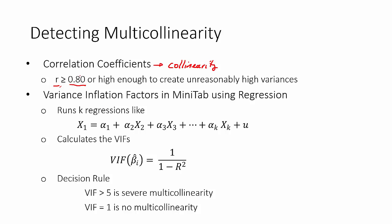The second method is actually calculated in the regression. These are called the variance inflation factors, or for short, we just call them VIFs. What the computer does behind the scenes is take each individual x in the model, and it runs a regression of all the other x's on that one x. It calculates the R-squared, and then in turn calculates this VIF.